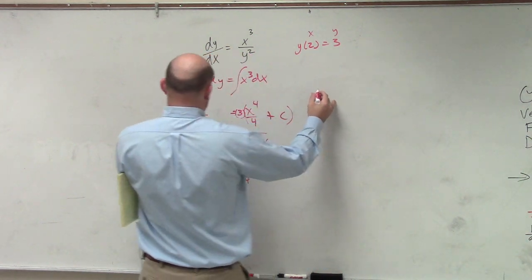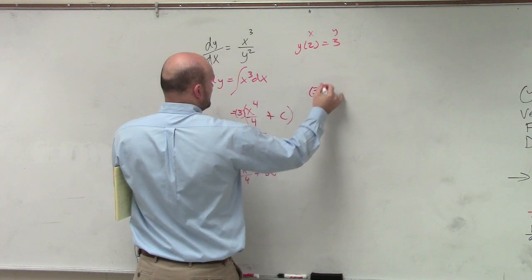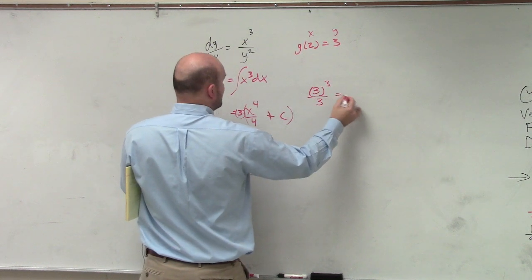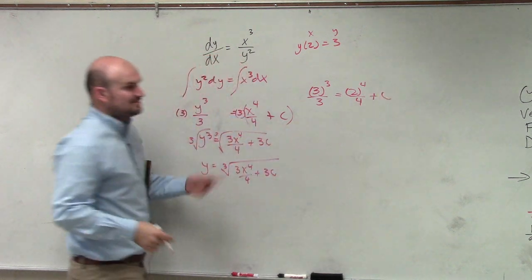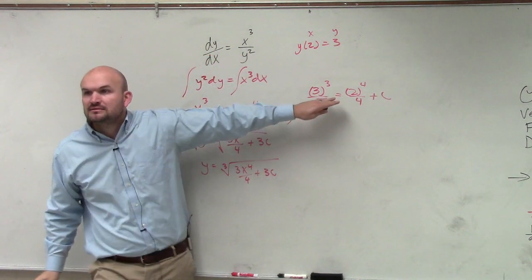If I was going to plug in my y, which would be 3 cubed over 3 equals 2 to the fourth over 4 plus c. It's much easier to solve for c up here, right?